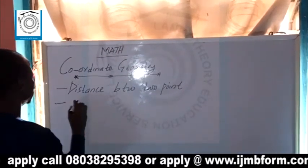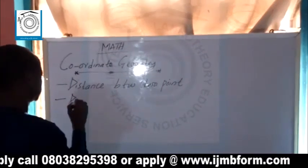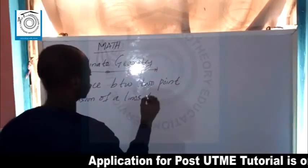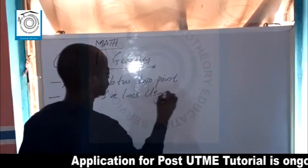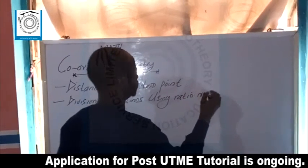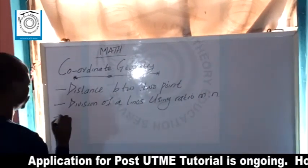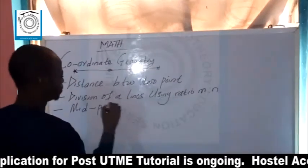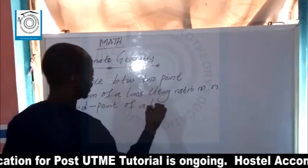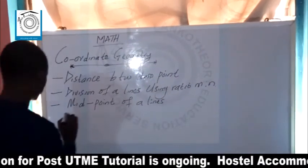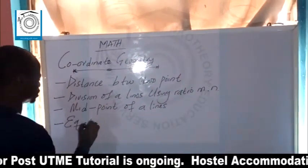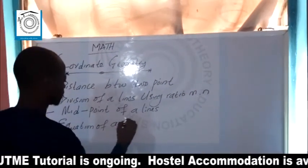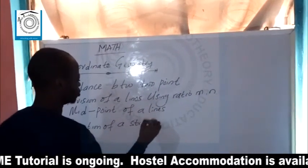Number two: we have division of a line, using the two end points. Number three: you must be able to know how to determine the midpoint of a line. Number four: you must be able to identify the equation of a straight line — basically there are three forms of the equation of a straight line, and you must be able to identify the difference between them.